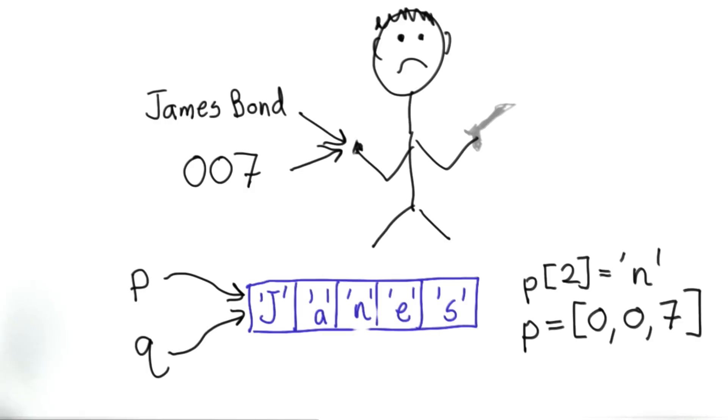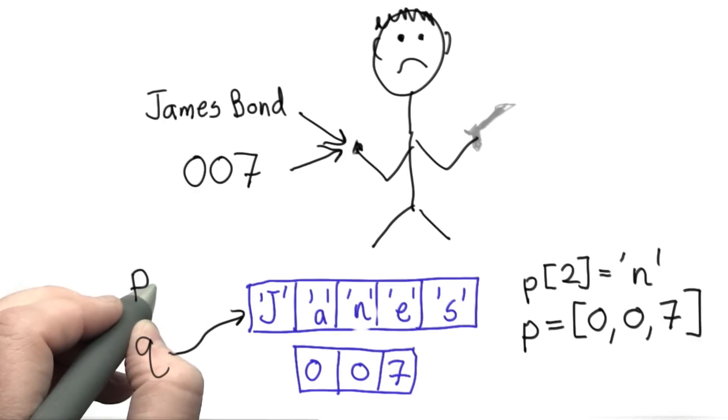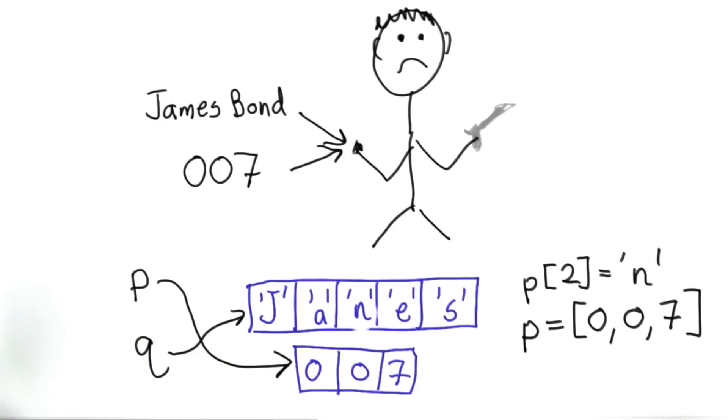where instead of changing the value of one of the cells that's part of the P object, we assign P to a new value. Well, this assignment would create a new object, a list containing three elements, the numbers 007, and it will change what the variable P refers to to point to that new object.